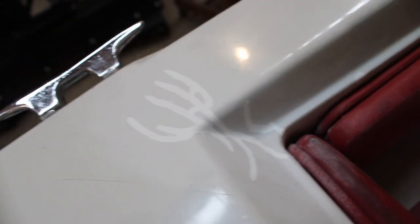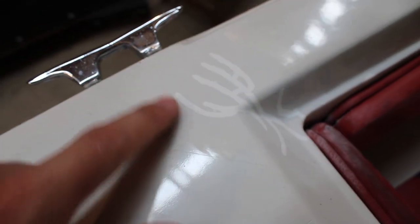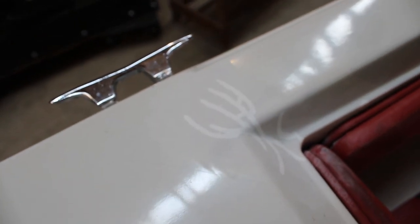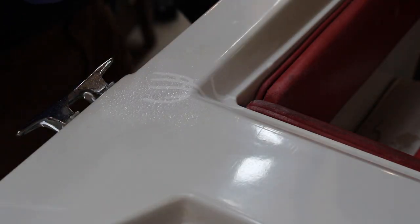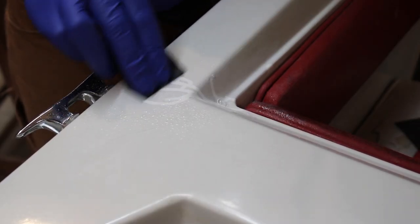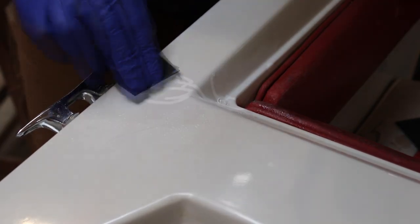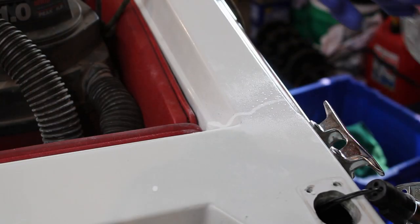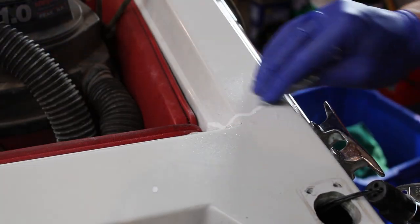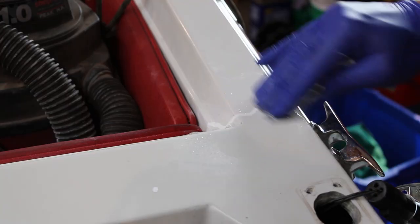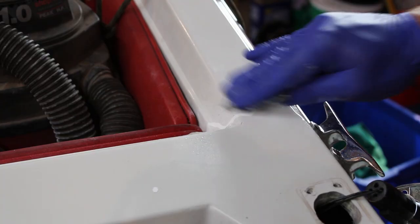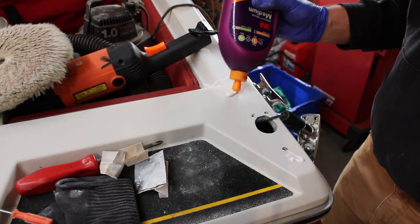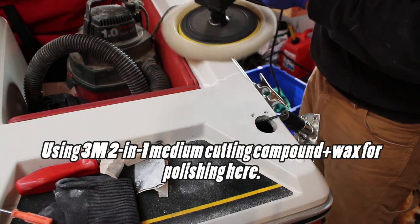Well, there's everything all sanded and smoothed out up to 400 grit. You can see we've got quite a bit of polishing left to do here, so that's going to be the next step. We're going to wet sand this up to I think 2500 grit.